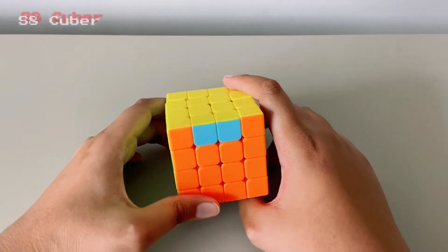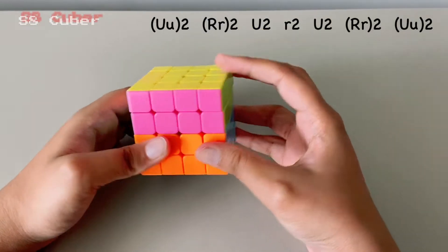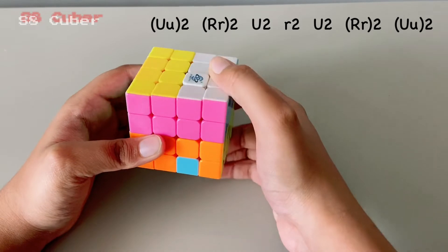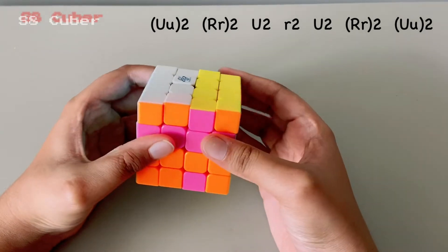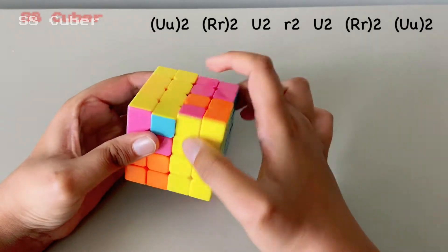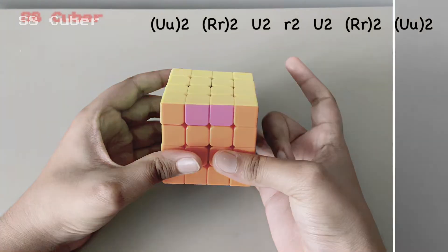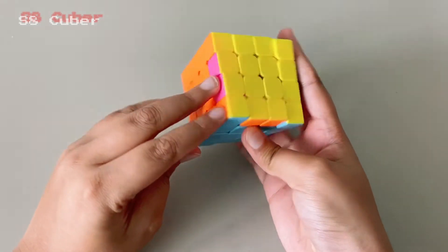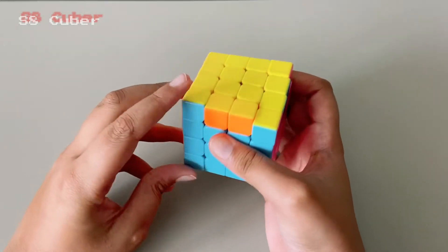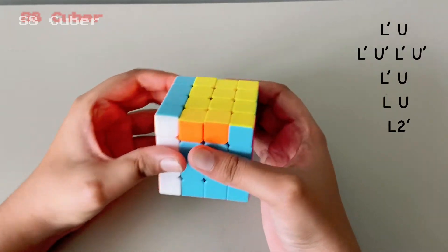So as you guys saw, after I did that algorithm, we got to one normal case which you get in the 3x3. So just solve it like you're doing the 3x3.